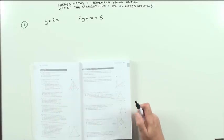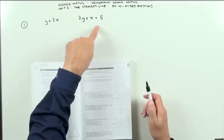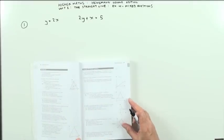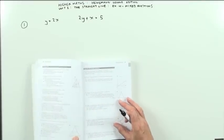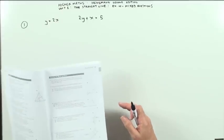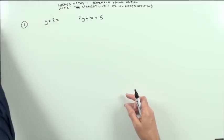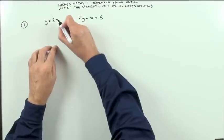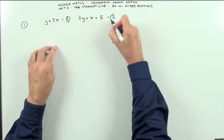So question 1 then. Two sides of a rectangle have got these equations here. Find algebraically the coordinates of the vertex of the rectangle formed by those sides. Well that means you want the point of intersection. I'll give them names. 1 and 2.